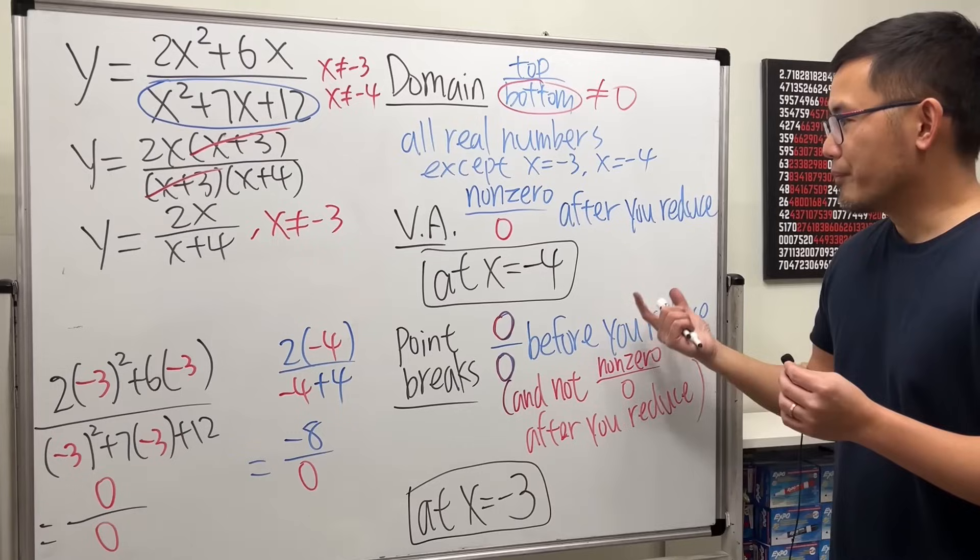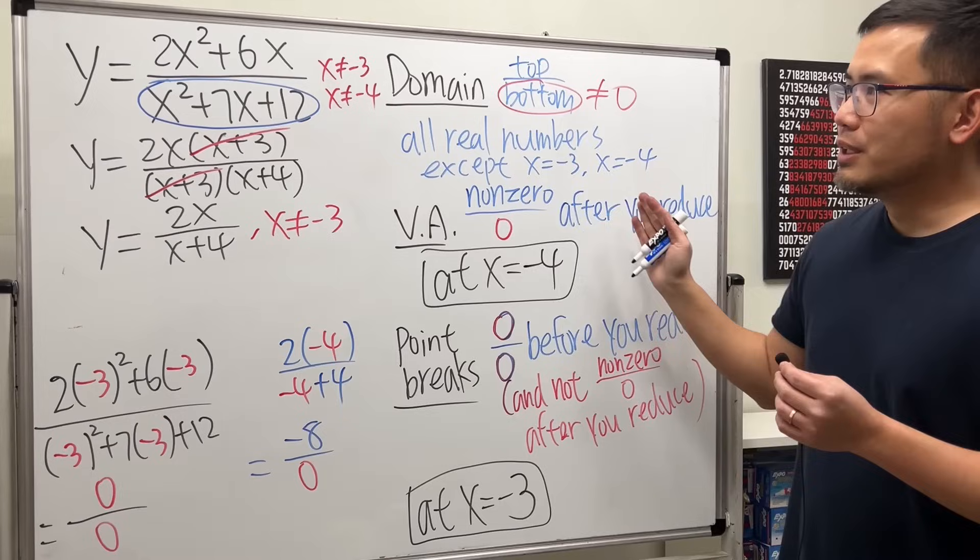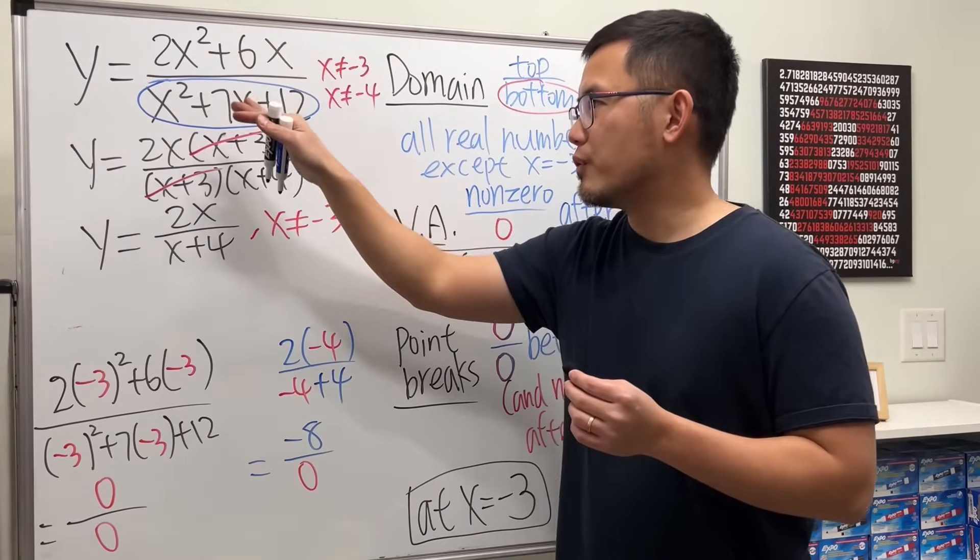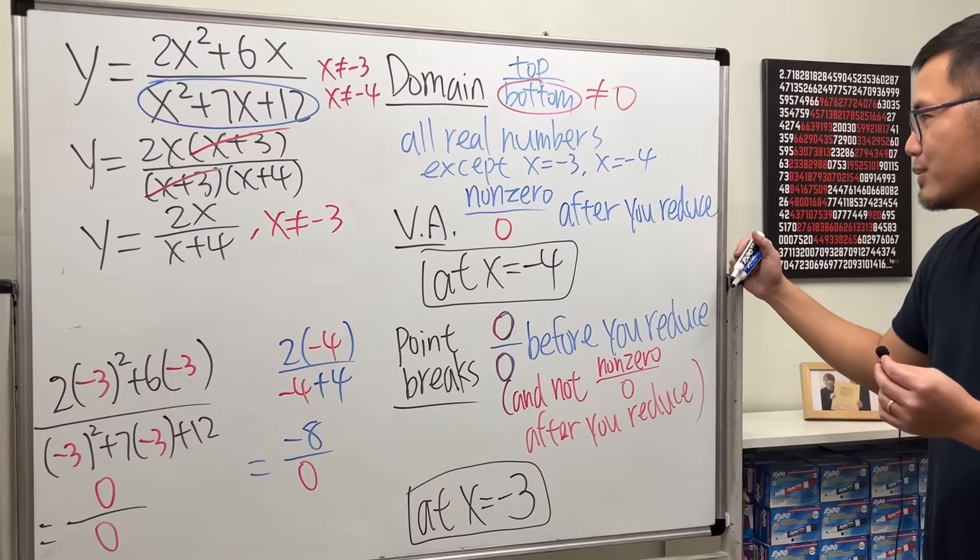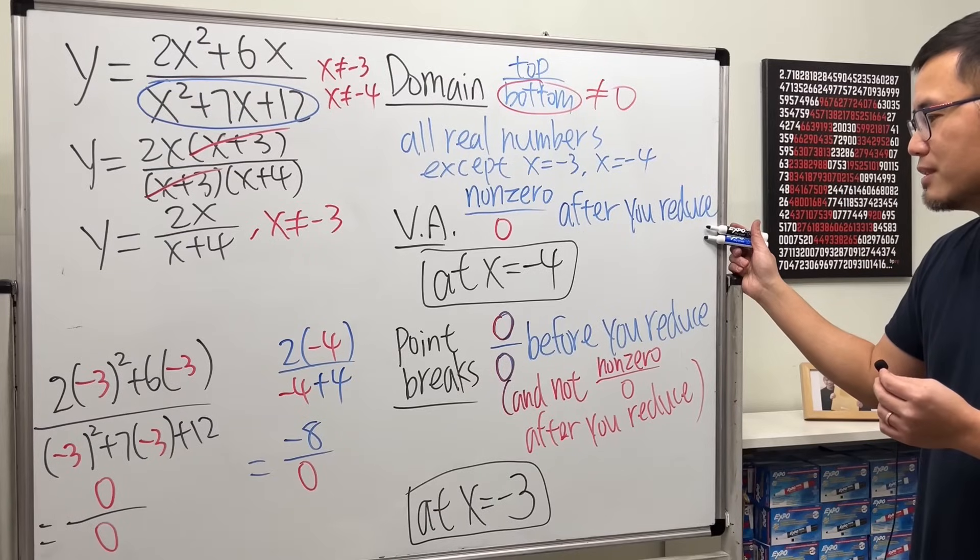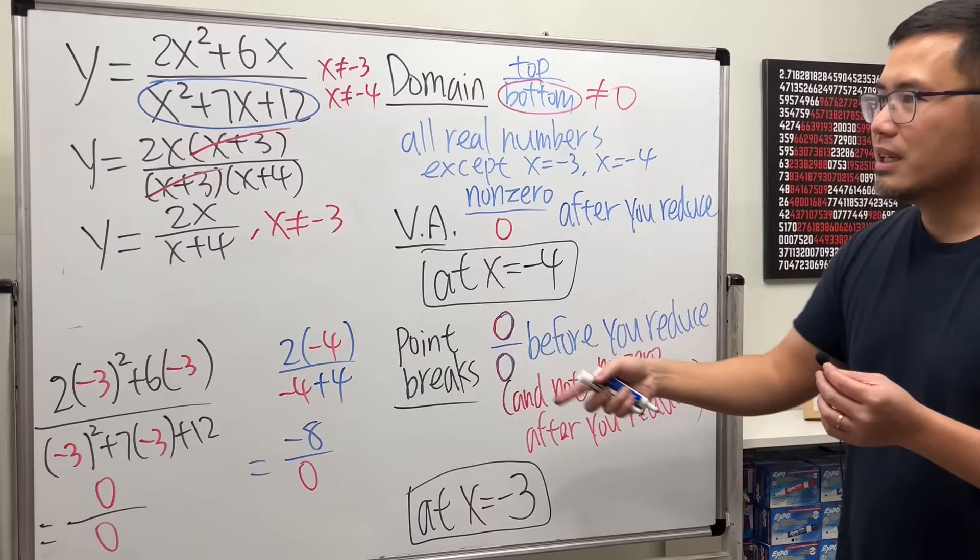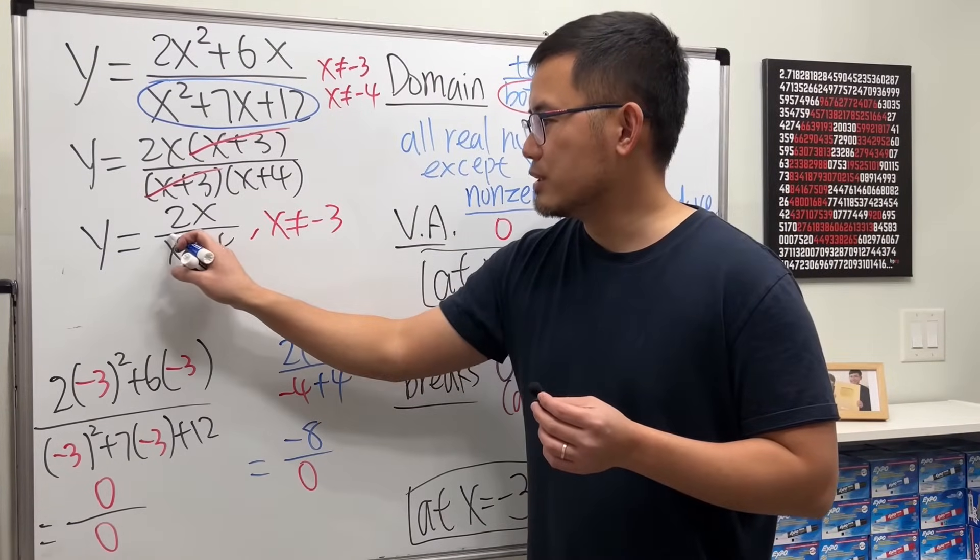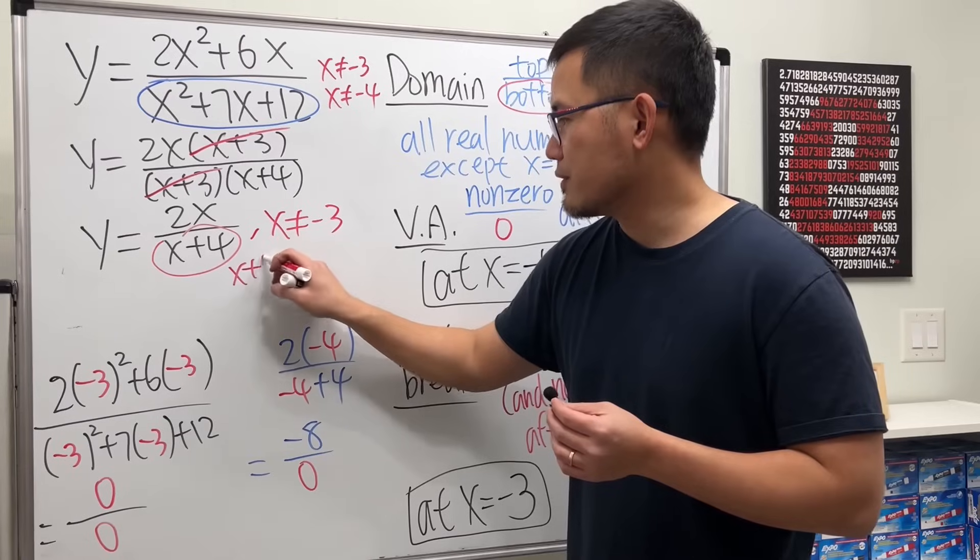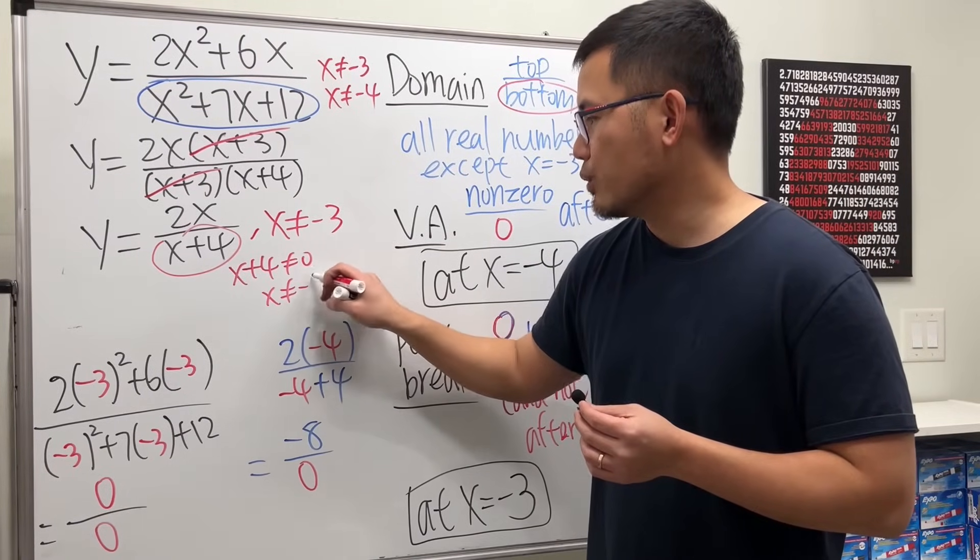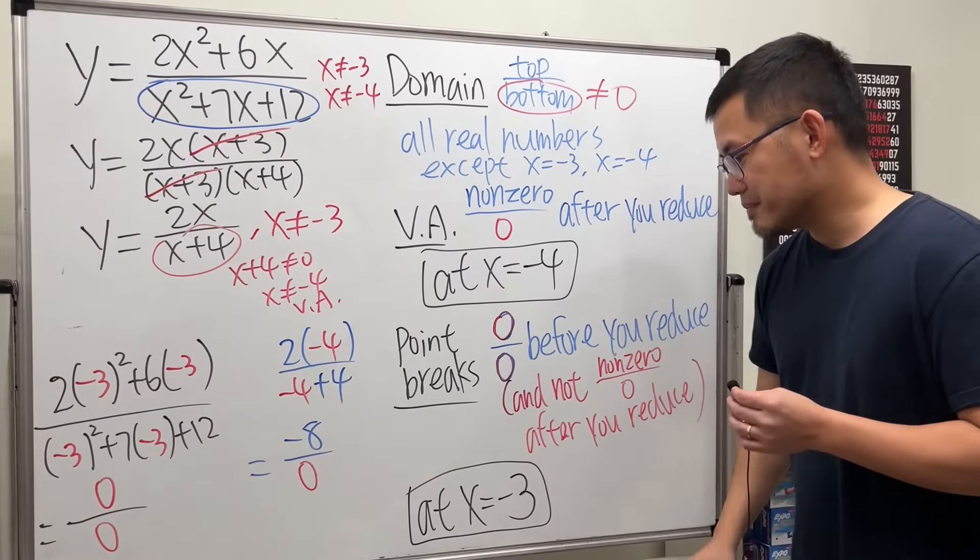So in fact, you don't have to worry about that after you reduce. You could actually just start with the original. You could still get non-zero over zero. So let me think about it. Do I want to say after you reduce? Yeah, I will still keep after you reduce because if you have to reduce, you can just put this to be 0. That seems easier that way. Look, you can just say x plus 4 cannot be 0, meaning x cannot be equal to negative 4. This gives you a vertical asymptote.